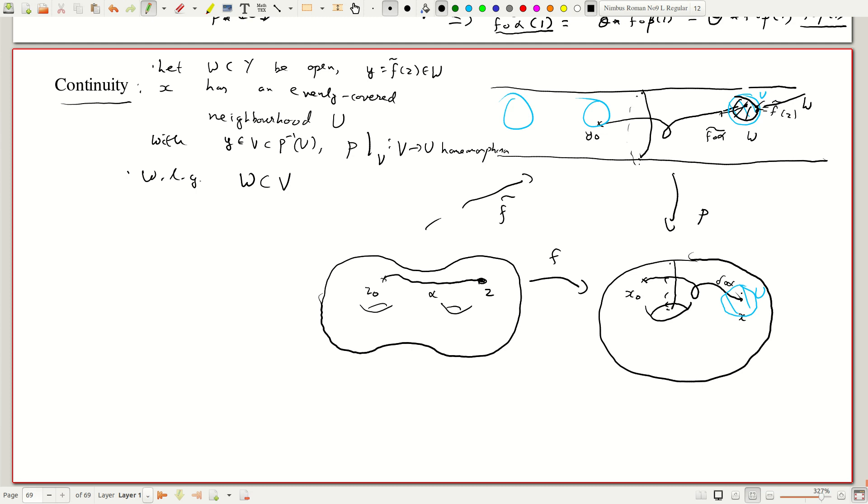And this is a homeomorphism. So here we end up with a neighborhood which is going to be called, well, it's just p of w. But this is open.